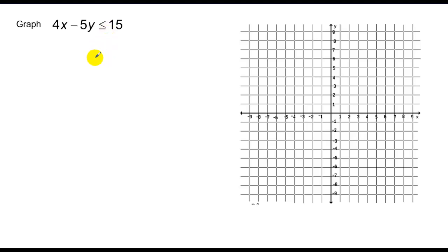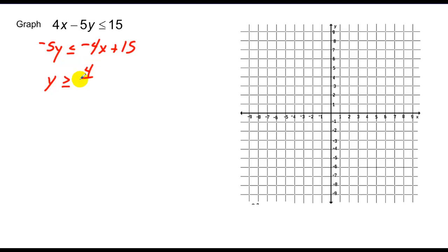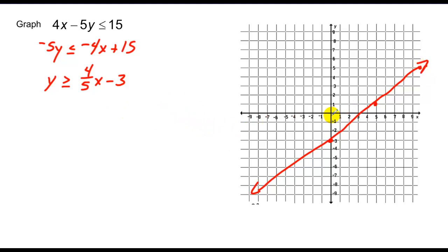Similar problem, just not in slope-intercept form, so let's convert. I take the 4x over by subtracting, then divide by negative 5. Notice that when I divide by negative 5, I flip the inequality. So I have positive 4/5x minus 3. I go down to negative 3, go up 4 over 5, do it twice. This time it's equal to, so I draw a solid line, and pick a sample point of (0, 0) once again.